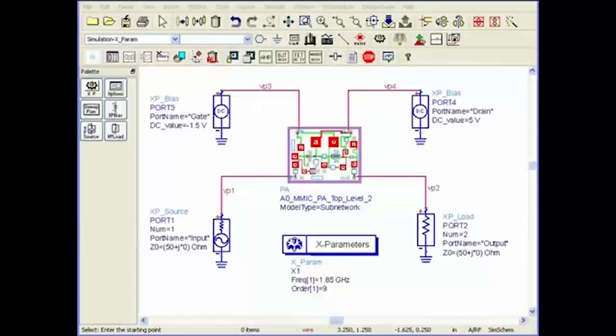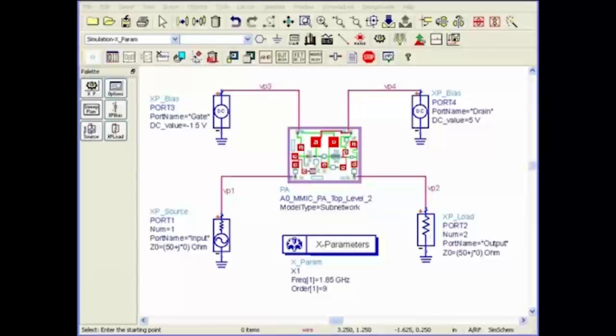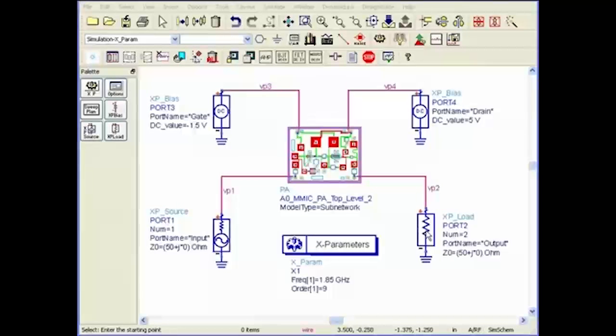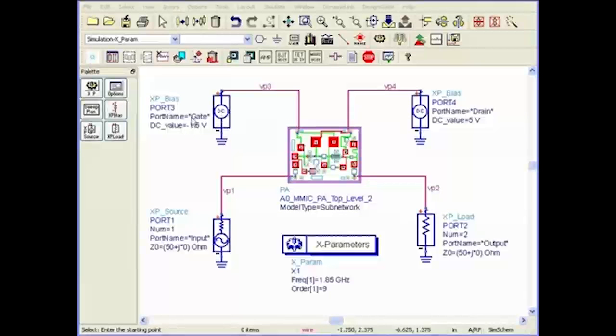Generating X-parameters is fast and easy in ADS. Let me show you how. All I have to do is insert my PA into this template, which consists of X-parameter source, load, and bias, all accessible from the simulation X-parameter pull-down menu shown on the left here.